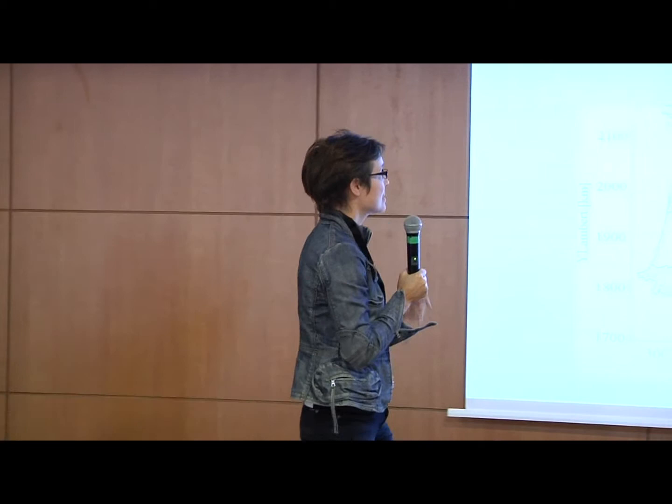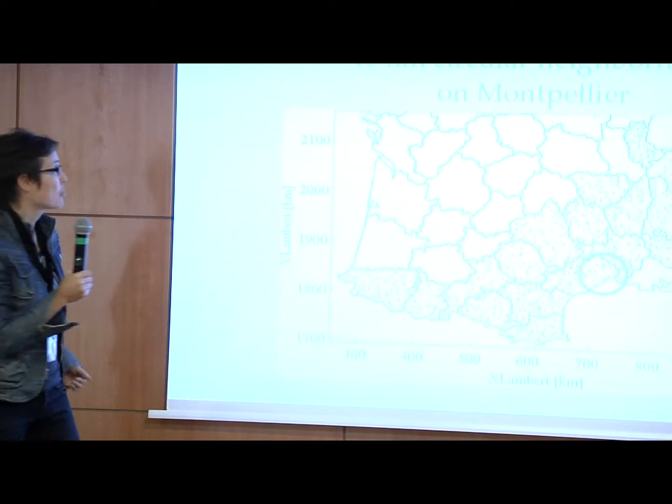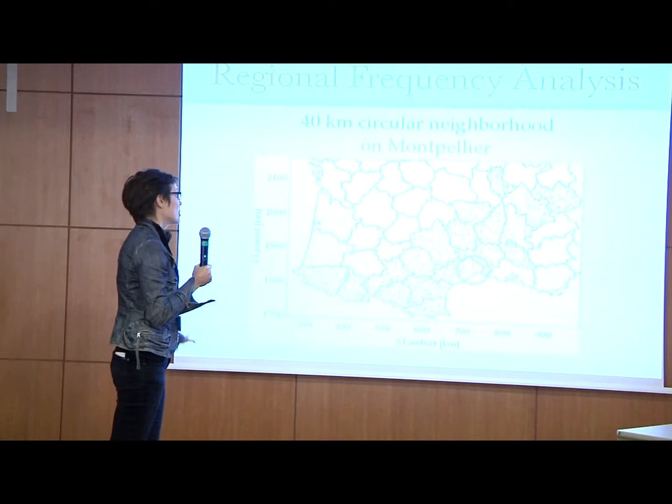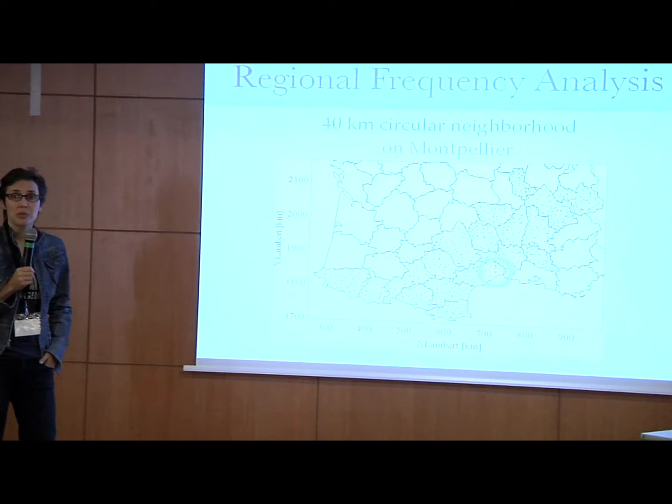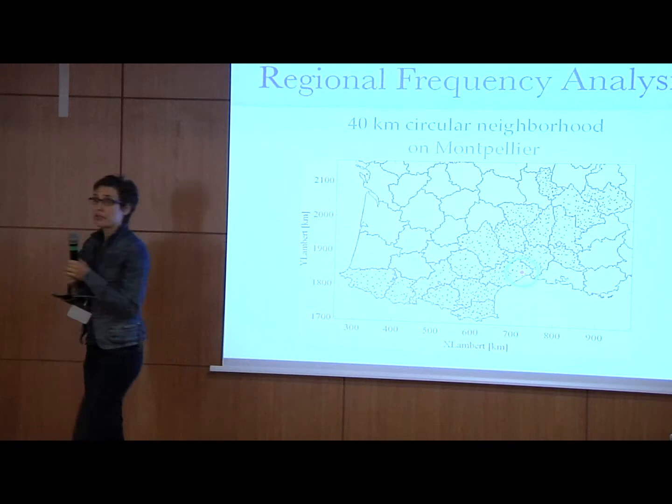So just to set up the framework — we heard already a lot about regional frequency analysis, but this is just to fix the idea. Let's say we want to perform regional frequency analysis in Montpellier, which is the city where I live, just right there in the south of France. This is the Mediterranean Sea, the Atlantic Ocean in Spain, and we have a bunch of stations. We fix a neighborhood, which is a circle — the green line here — which has 40 kilometers of radius, and we're going to use the information over there to do the analysis.